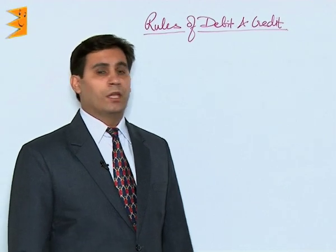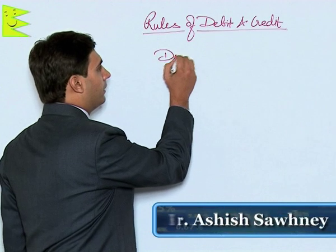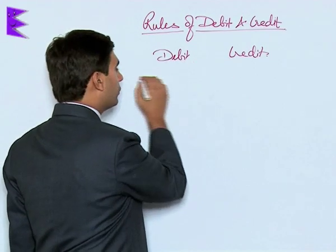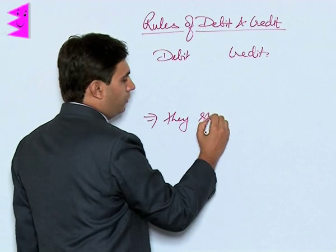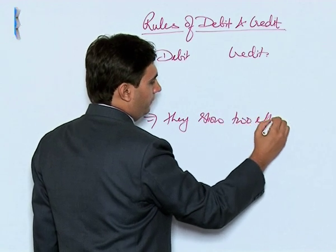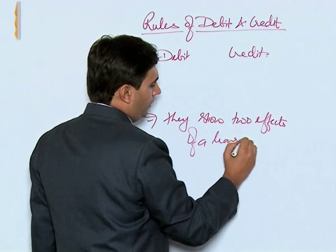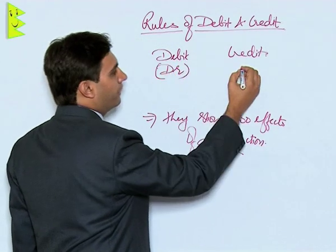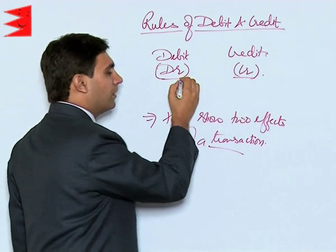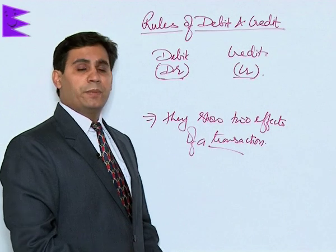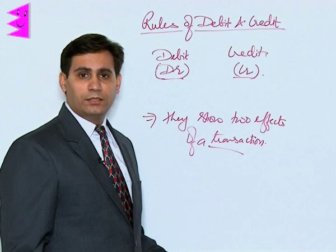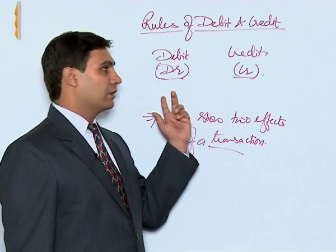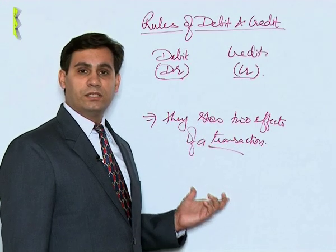Rules of debit and credit. Students, these two terms — debit and credit — are used in accounts to show the two effects of a transaction. Debit is written in short as DR and credit as CR. There are lots of theories and interpretations of how these terms came into being, but we will not go into the historical aspect. We will just remember that debit and credit are the two terms used to show two different aspects of a transaction.